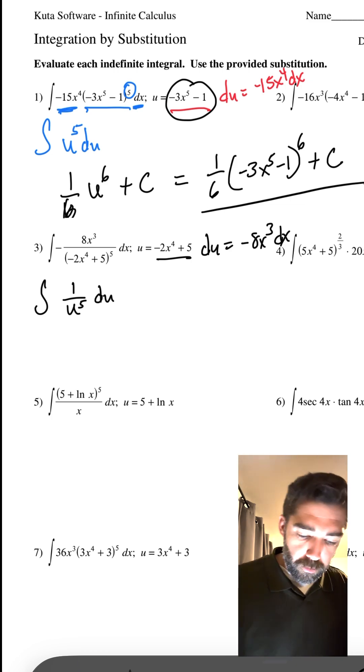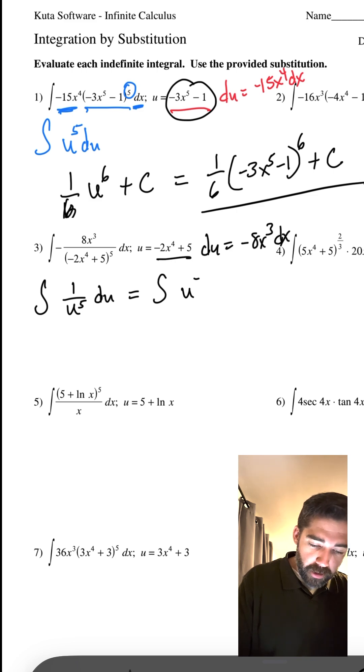Now what do we do? Well, I'd love to see this as the integral of U to the negative 5 DU. Because now I can use it.